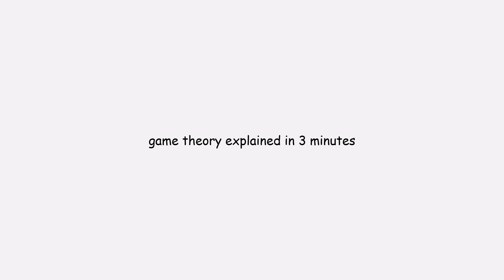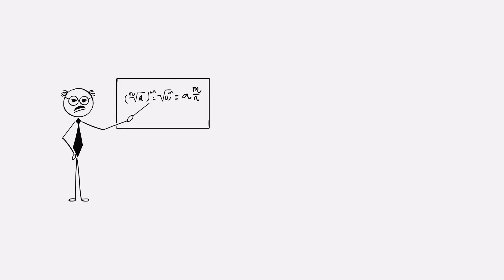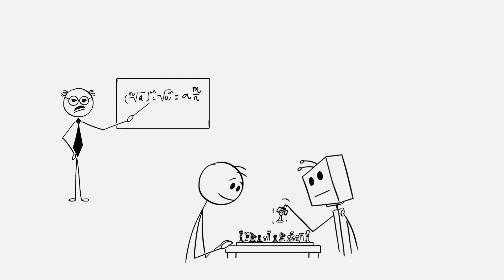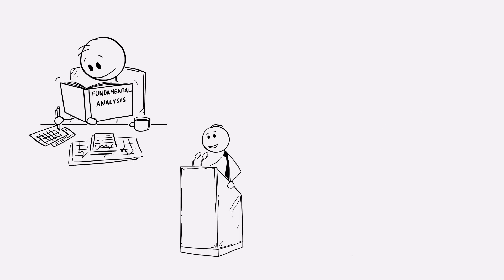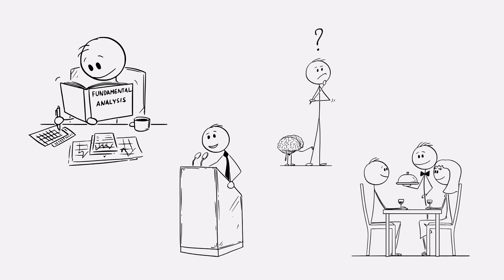Here is game theory explained in three minutes. Game theory is the mathematical study of how people make decisions when the outcome depends not only on what they do, but also on what others do. And it's not just about games. It's used in economics, politics, psychology, and even in everyday life.